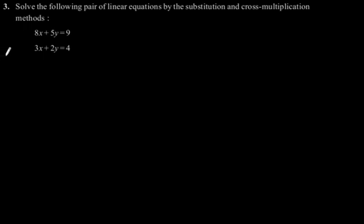Exercise 3.5, Question number 3. Solve the following pair of linear equations by the substitution and cross multiplication method. The given equations are 8x plus 5y is equal to 9, and 3x plus 2y is equal to 4.